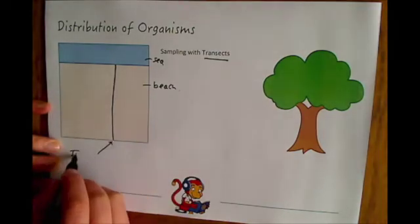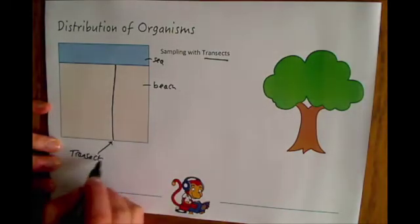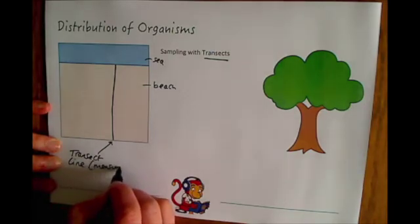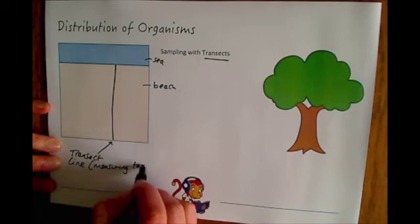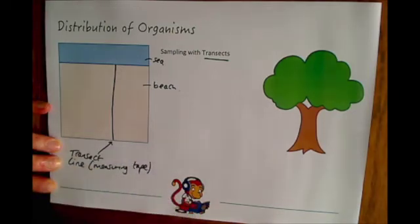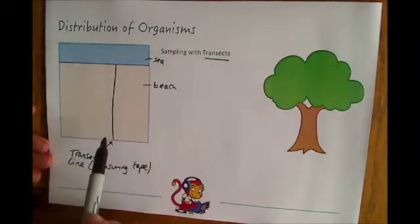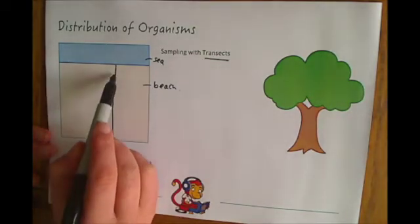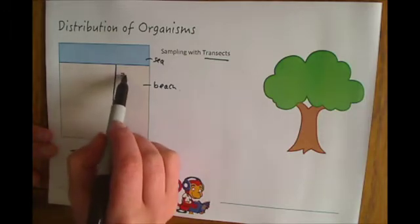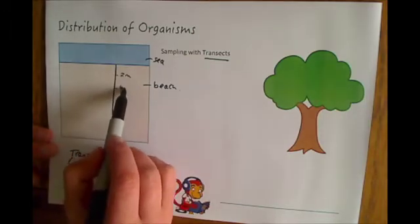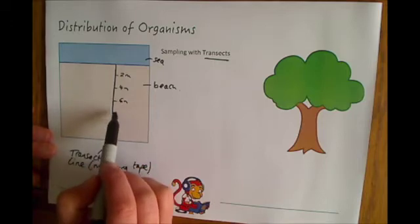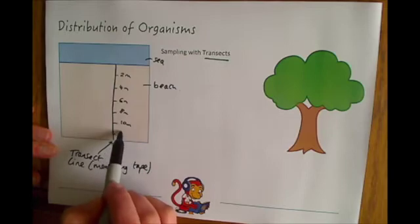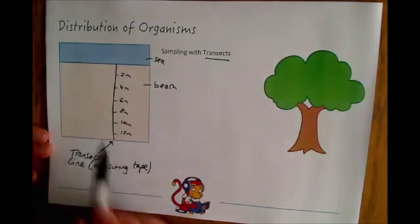This would be our transect line, which is essentially just a measuring tape, and we would then sample at regular intervals along that transect line. It could be every two meters, for example, that we sample along that line.